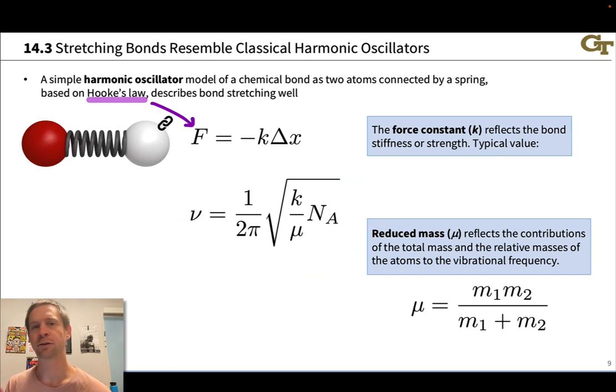I don't want to go through the derivation. I just want to point out the important variables in this equation and what they tell us about how to think about mass and bond strength or spring stiffness, if you like, and the oscillation frequency.